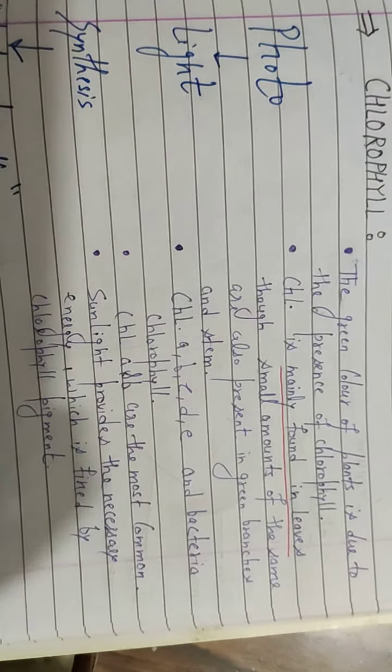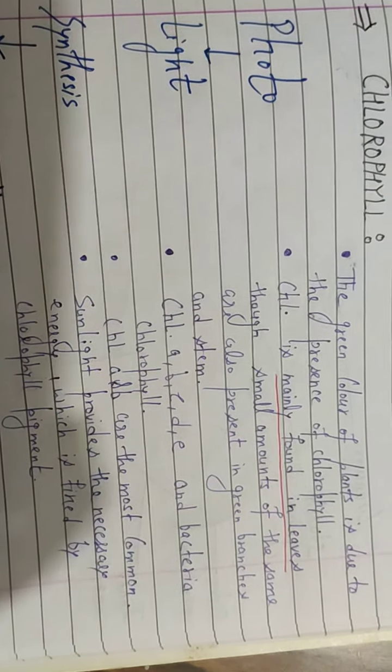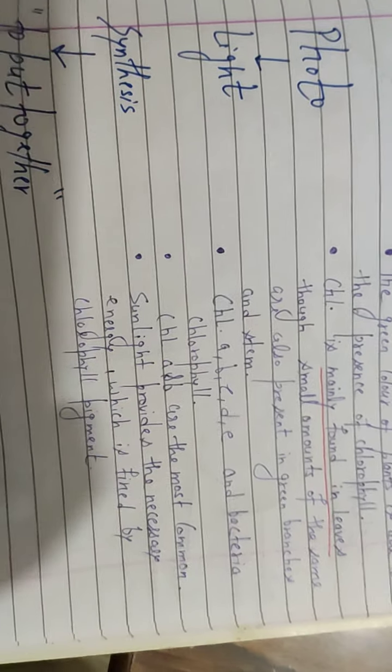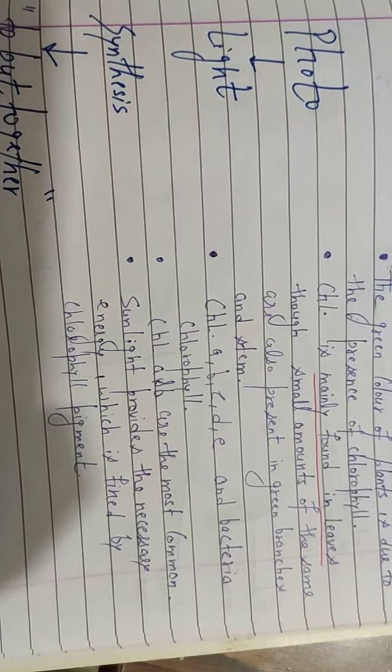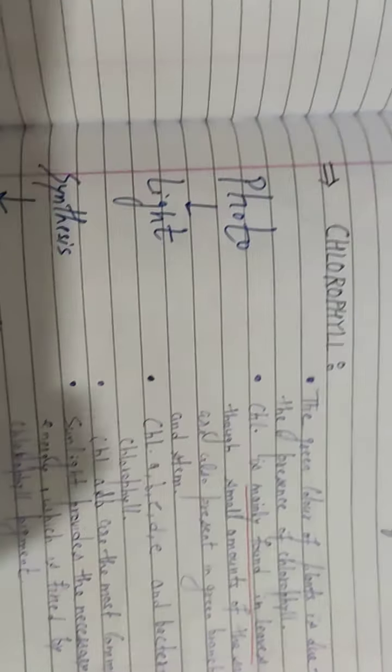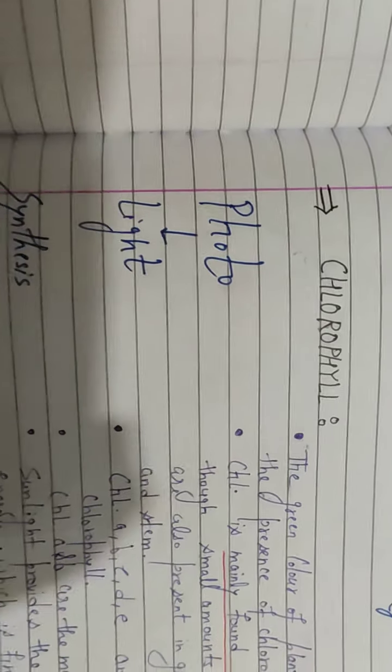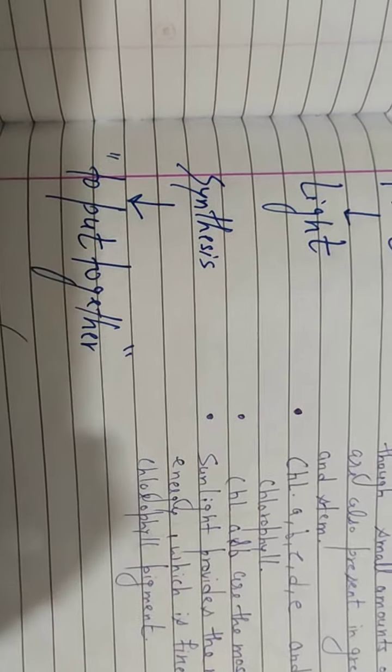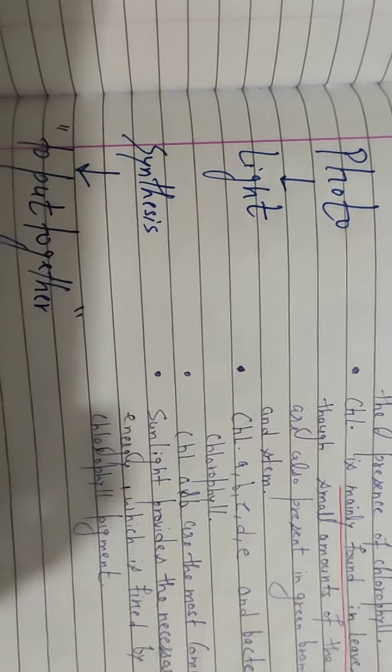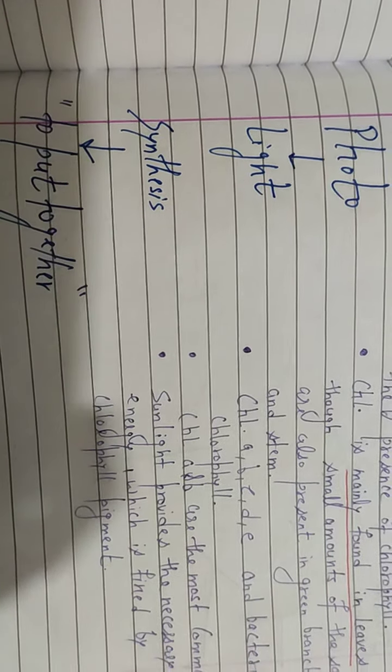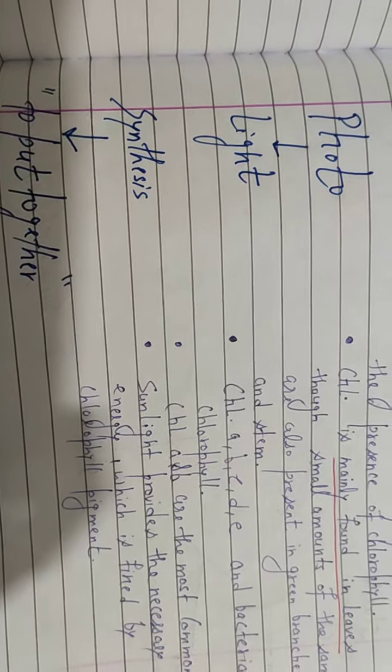The most abundant and most common ones are chlorophyll a and b. Sunlight provides the necessary energy which is fixed by chlorophyll pigment. Photo means light, synthesis means to put together. The light energy produced is used to convert inorganic raw material into organic raw material.